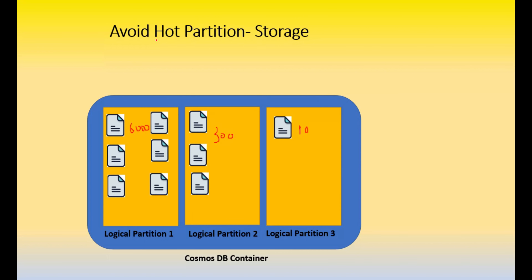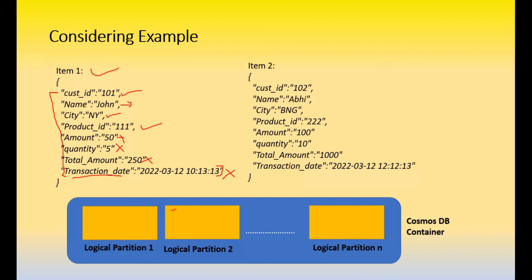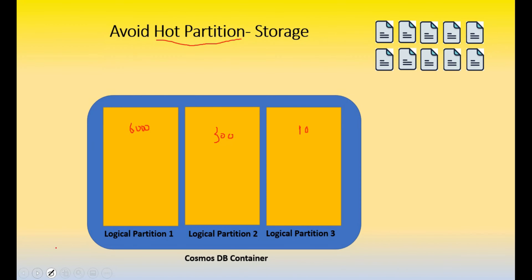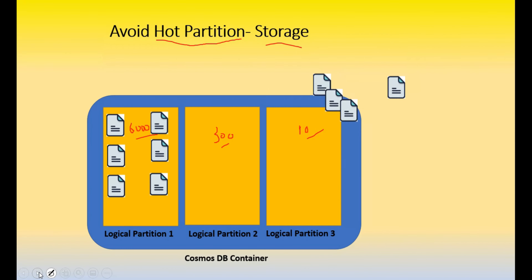To avoid hot partitioning in storage, you need to analyze historical data. For customer ID: if there are many customers each doing a decent number of transactions, customer ID is a good candidate. But if many customers do only a single transaction and never return, choosing customer ID will lead to hot partitioning where data concentrates in just a few partitions while others remain nearly empty. So analyzing data distribution is essential before deciding the partition key.